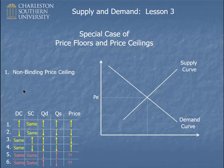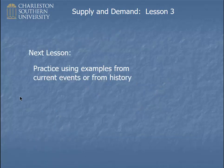A non-binding price ceiling would be if you put the ceiling up above the equilibrium price. The natural order of affairs is trying to set the price at equilibrium, and of course that's allowed since it's below the ceiling. So the price would just be at equilibrium, and this price ceiling would be non-binding. The next lesson is on some examples from current events or from history, and you'll get a chance to practice moving the supply and demand curves. I hope you found that helpful.